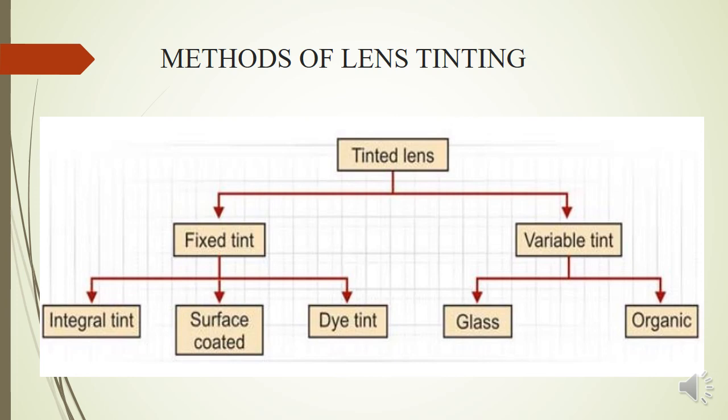Surface coated lenses have only the surface coated with a particular color or material — mirror coatings and reflective coatings are commonly done this way. Dye tint involves dipping a plastic lens into a hot dye solution, which absorbs the color onto the surface. The longer the lens remains in the solution, the darker the color achieved.